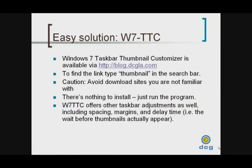So just to summarize: in order to download the Windows 7 Taskbar Thumbnail Customizer, simply visit blog.dcgla.com. Once you're on the site, it's easiest to find the article you're after by typing the word "thumbnail" in the search bar — that'll bring up the relevant thumbnail related articles, and the one that you want will be the first one. I always like to caution folks to visit sites that you trust when it comes to downloading files, as so many sites these days can infect your computer with malware and viruses, and that's no fun.